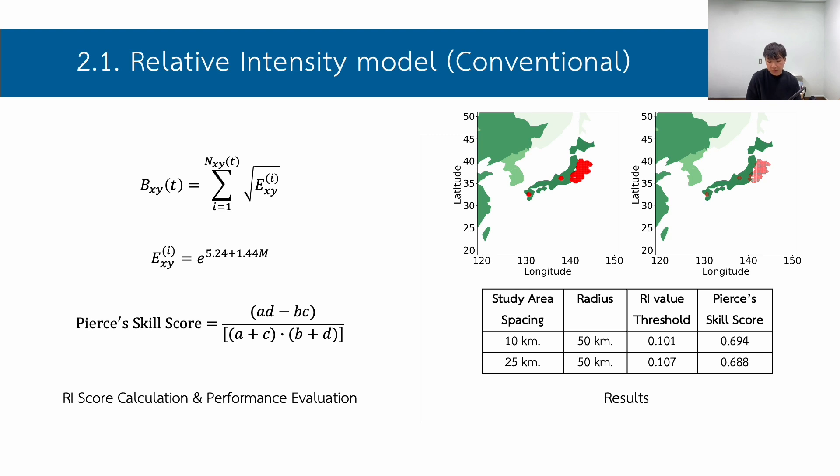Then the derived array value is used to determine what value of array would cause the earthquake. For example, for 0.5, earthquakes are more likely to occur. For this calculation, we used the data from test, and we used the Pierce's skill score to find the best threshold value. Pierce's score is widely used to evaluate performance of the binary classification models. Pierce's score is used to find optimal setting for the array model. From the result table, study area with 10km spacing performance relatively better than study area with 25km spacing.